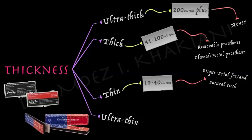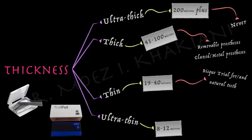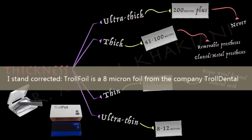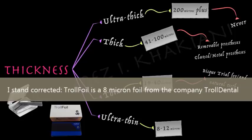Now let's look at the ultra thin category — the finest articulating papers available in the market. I cluster these between 8 to 12 microns. These are extremely thin and are usually foils rather than papers, because paper in such thin dimensions would tend to tear very easily. What you see in the pictures on the left is a metallic foil called shim stock. An example of an 8 micron thick foil is Artifoil, available from the company TrollFoil.